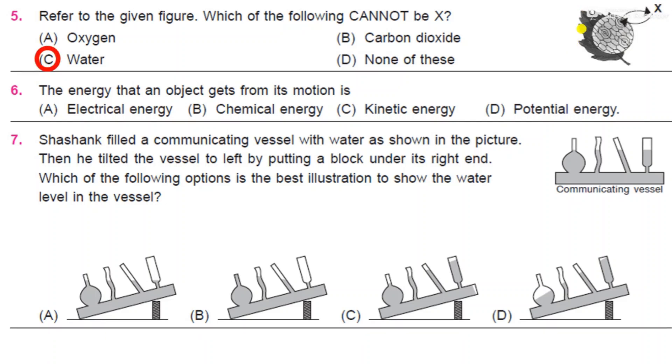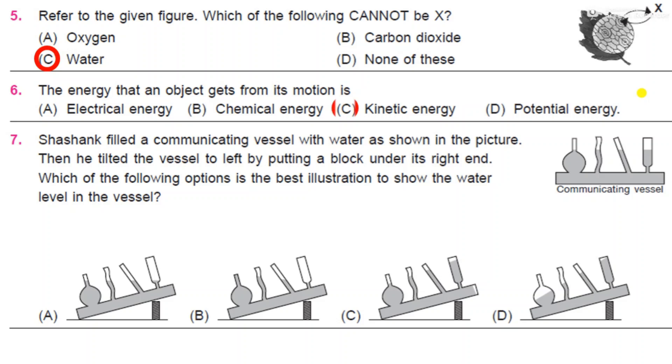Next: the energy that an object gets from its motion is electrical energy, chemical energy, kinetic energy, or potential energy? It is related to motion.